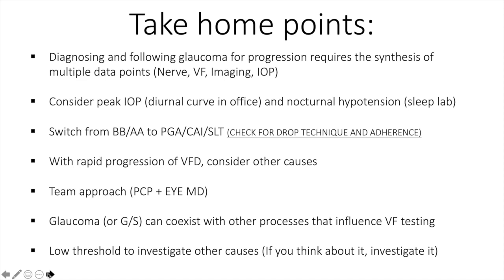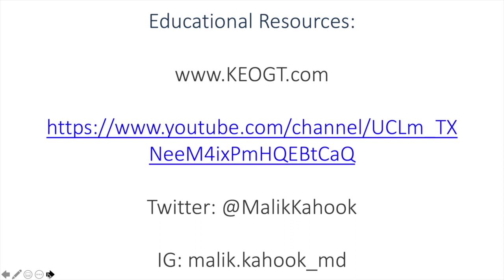To close with take-home points: diagnosing and following glaucoma for progression requires synthesis of multiple data points — nerve, visual field, imaging, and IOP. Consider peak IOP, diurnal curve in the office, and nocturnal hypotension, getting a sleep lab involved whenever possible. Switch from beta blocker plus alpha agonist to a combination of PGA and carbonic anhydrase inhibitor for nighttime control. Consider SLT especially when adherence may be an issue. Check drop technique and adherence. With rapid progression of visual field defect, always consider other causes. Low-tension glaucoma often requires a team approach between the eye care professional and the primary care physician. Glaucoma or glaucoma suspect can coexist with other processes like age-related macular degeneration. We should all have a low threshold to investigate other causes with imaging — if you think about it, investigate it. For further educational resources, consider visiting keogt.com.